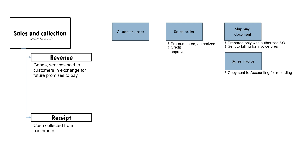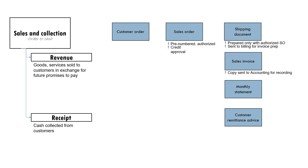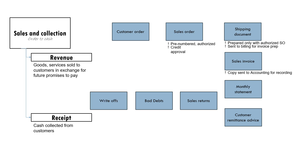Because customers may have multiple transactions with the business within the month, the business will also send customers a monthly statement detailing their unpaid balances. When the customer pays, the customer includes a customer remittance advice to alert the business as to which particular customer and invoice the payment is for. Since we're talking about sales, we have to discuss the entire sales family — which includes not only sales but also sales returns, bad debts, sales returns and allowances, and write-offs.